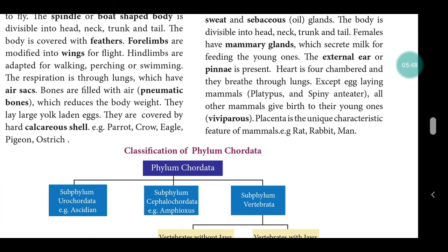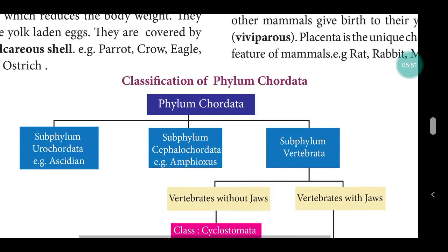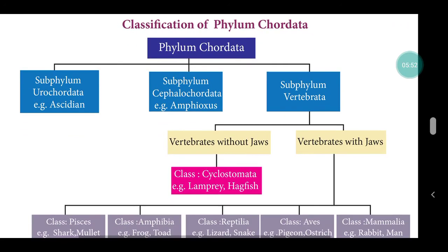Now let us see the classification of Phylum Chordata. Phylum Chordata consists of three subphyla: Urochordata, Cephalochordata, and Vertebrata. Urochordata — example: Ascidia. Vertebrata is further divided into vertebrates without jaws and vertebrates with jaws.